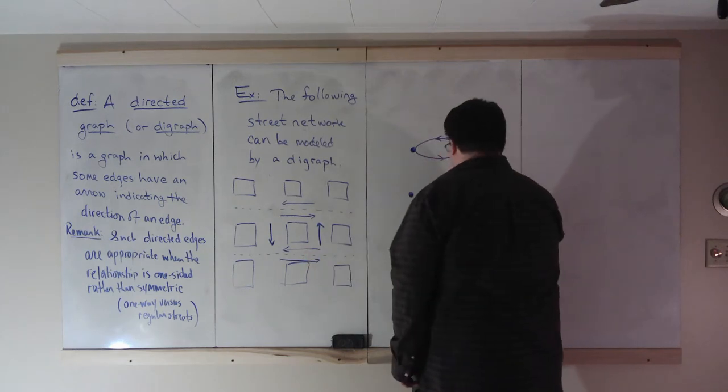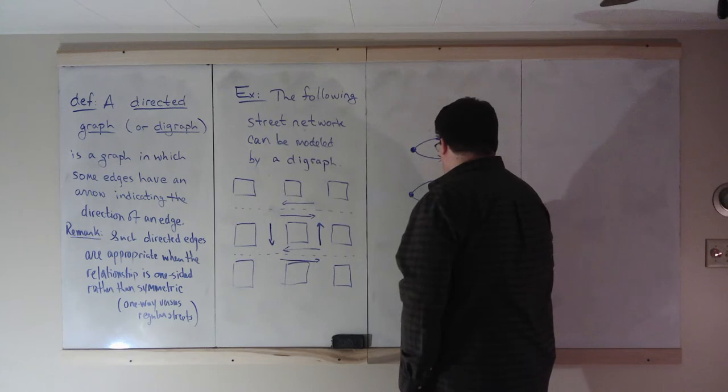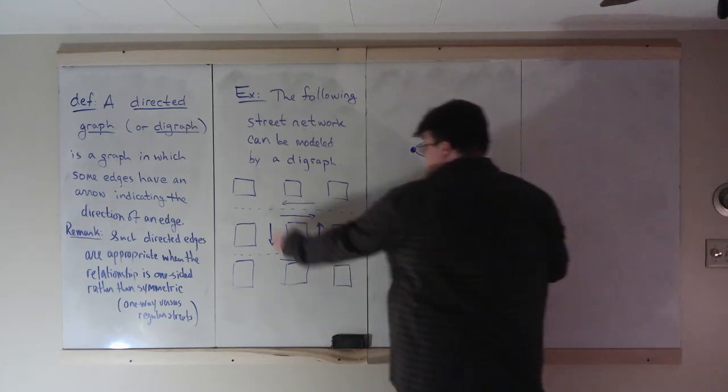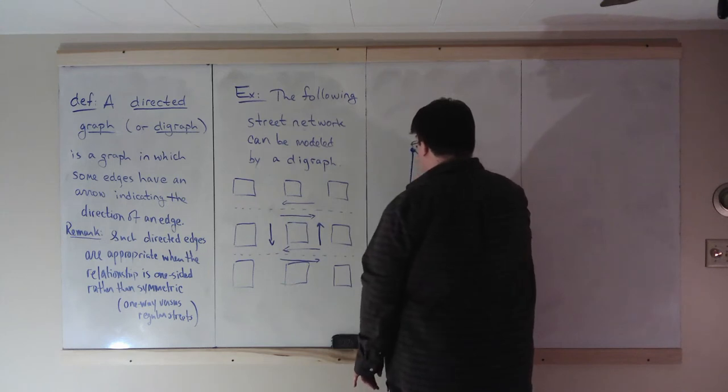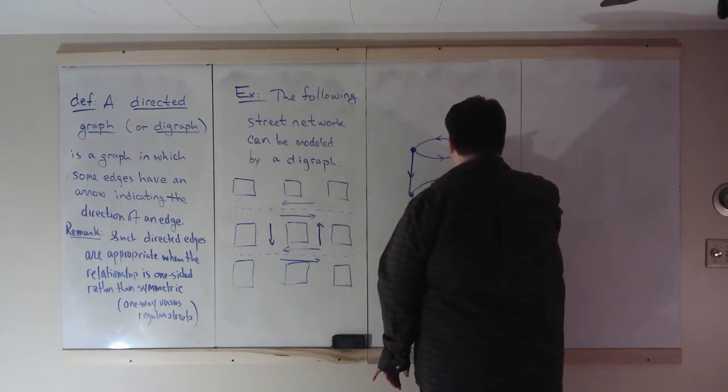Similarly, down here we have the same type of situation. One arrow going that way, one arrow going that way. But connecting these, we have on this side one arrow going down. On this side we have one arrow going up.